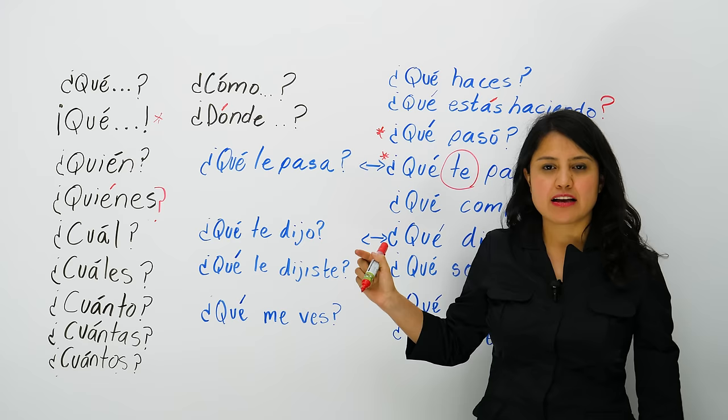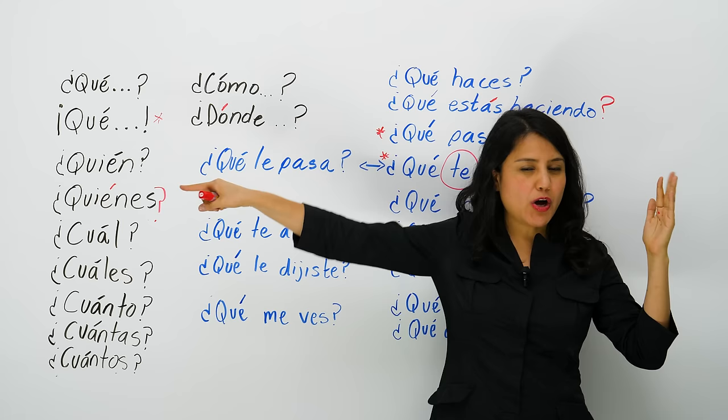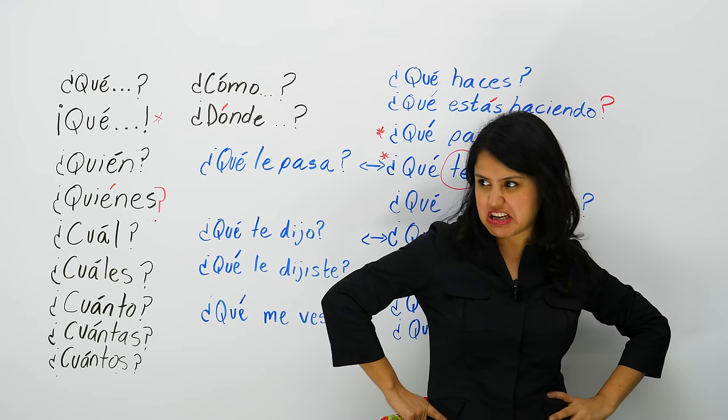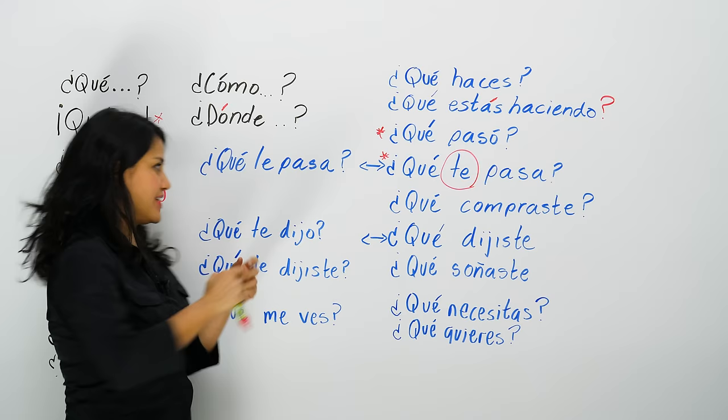Now you can say 'qué le pasa' if you're talking about a third person. If you're talking to your friend Juan and you're asking about someone else, you say 'qué le pasa' — you're talking about him or her, not to them. It's when you're talking about someone in the third person. Qué le pasa.